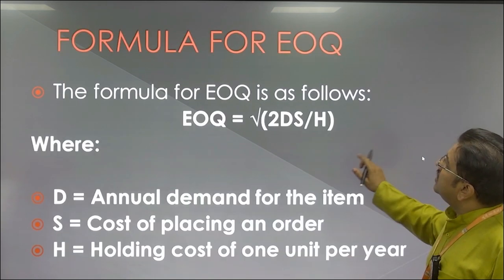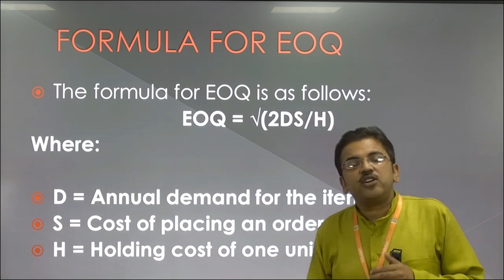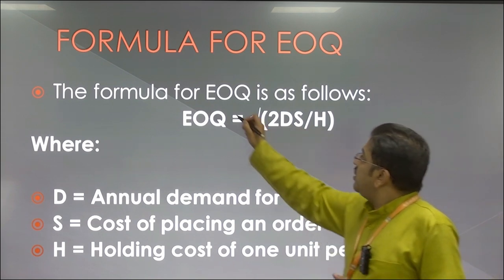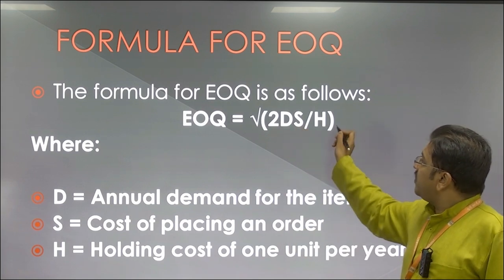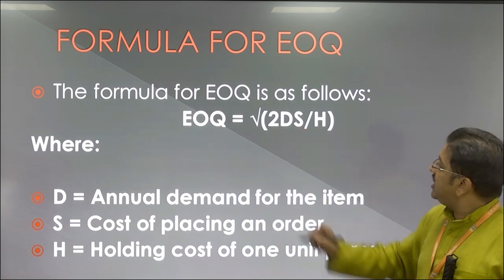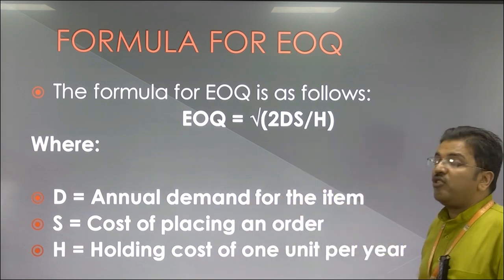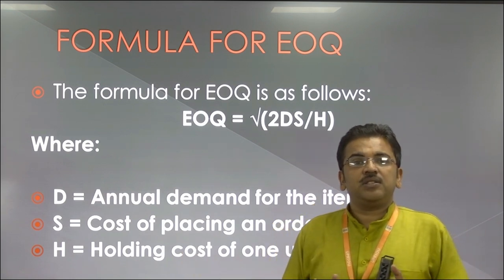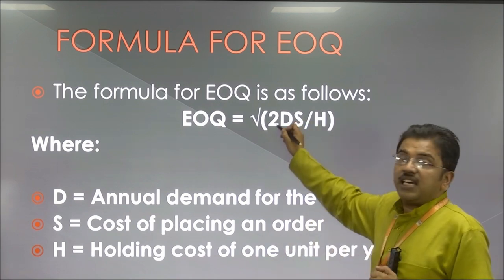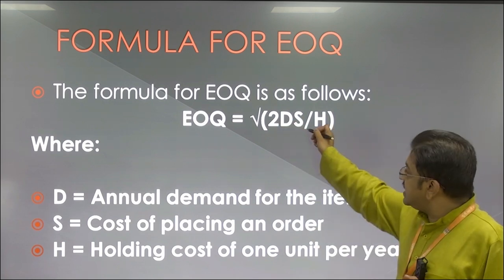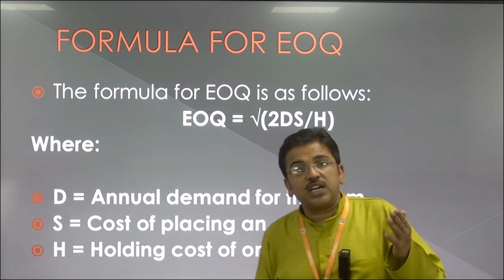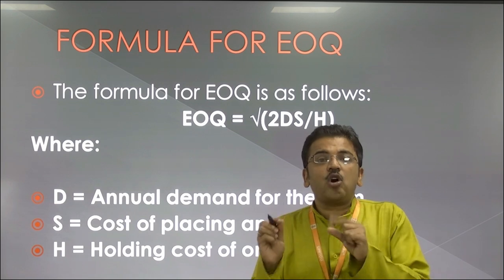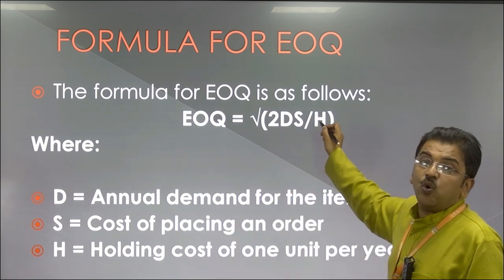Now let us see the formula for Economic Order Quantity. How do you calculate EOQ? The formula is: EOQ = √(2DS/H). Here D stands for annual demand for the item — what is the demand for that specific item in a year. The number 2 is a constant value. S is the cost of placing an order — what is the ordering cost for that specific raw material, which we place in the numerator — divided by H, the holding cost.